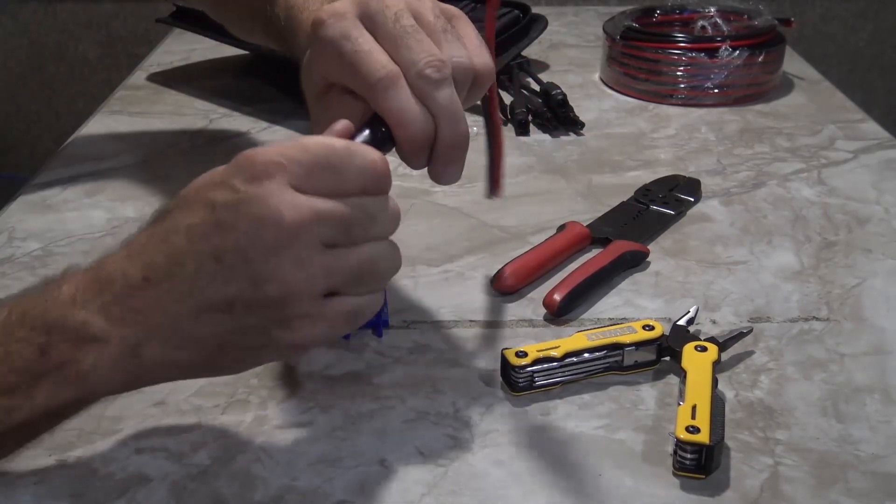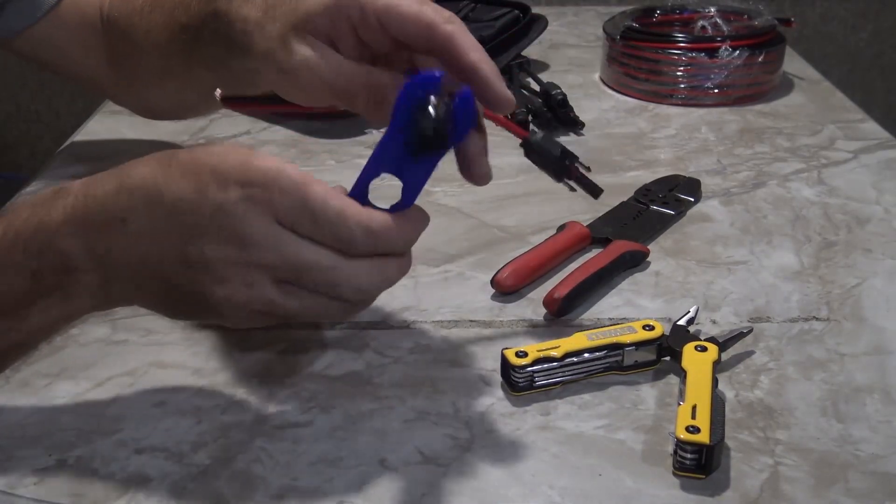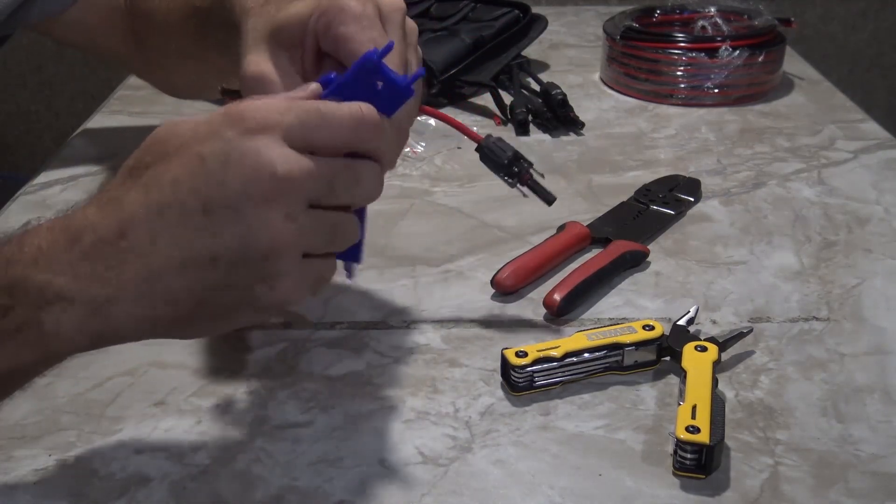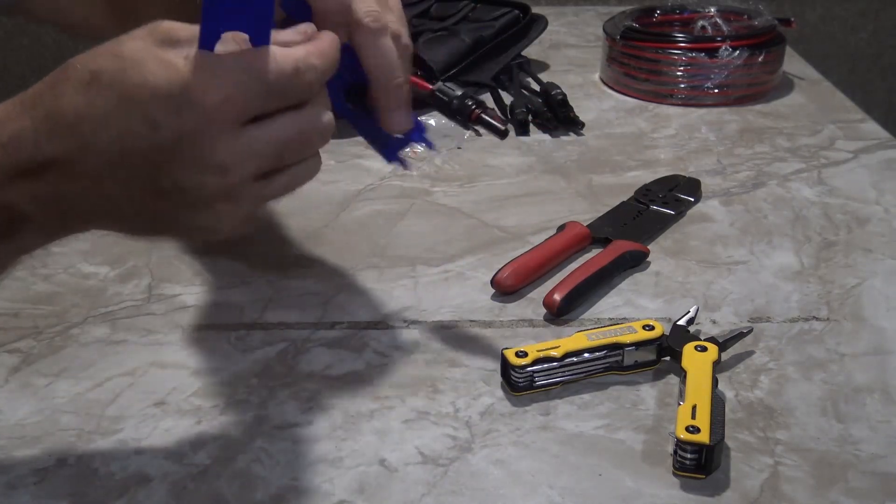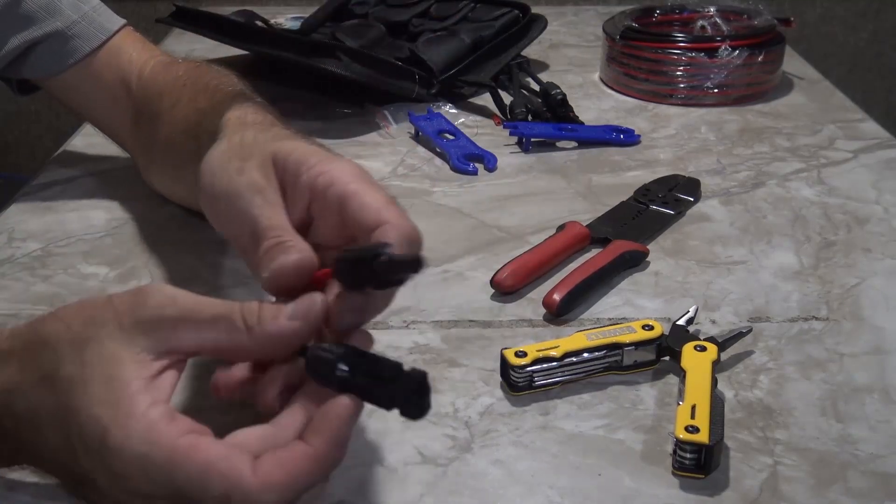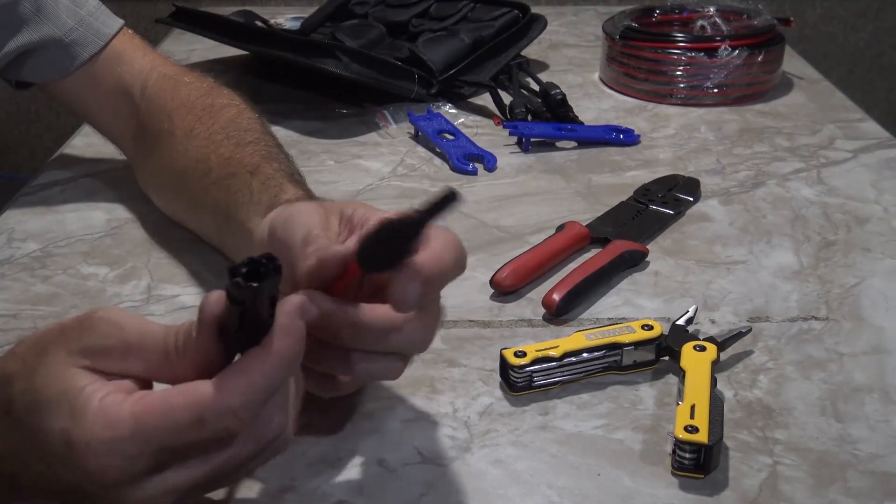Tighten this as much as you can finger tight. Get the tools on, one two three, and there you go. That is two solid MC4 connectors that are on there.